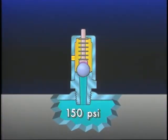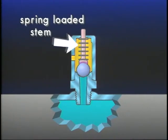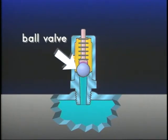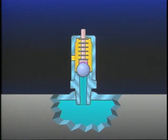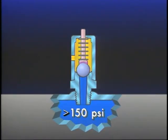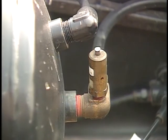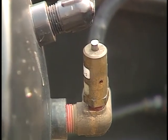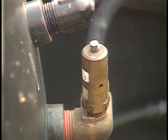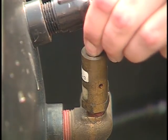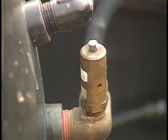Generally set to open at 150 PSI, the safety valve employs a spring-loaded stem resting on a seated ball valve. When reservoir pressure exceeds the valve setting of 150 PSI, the ball moves off its seat and air is exhausted through the exhaust port. The safety valve should be checked periodically by pulling the exposed stem. Air should escape when the stem is pulled and cease when released.